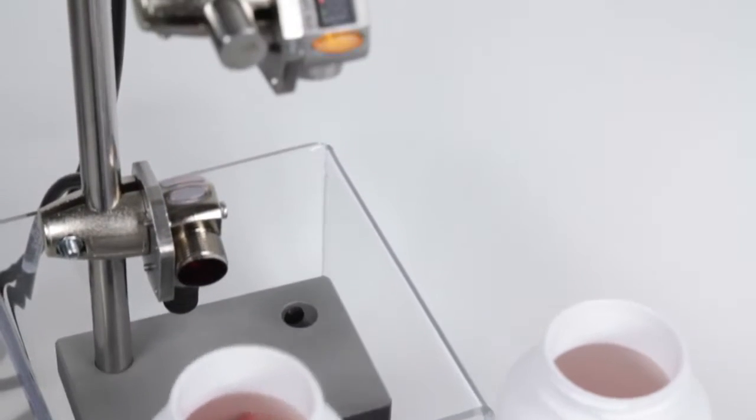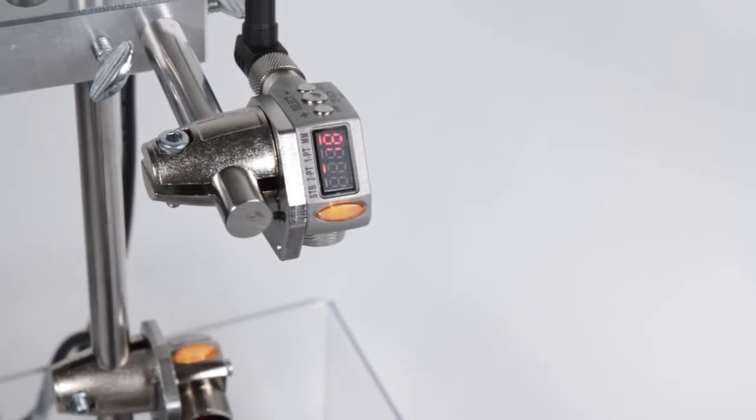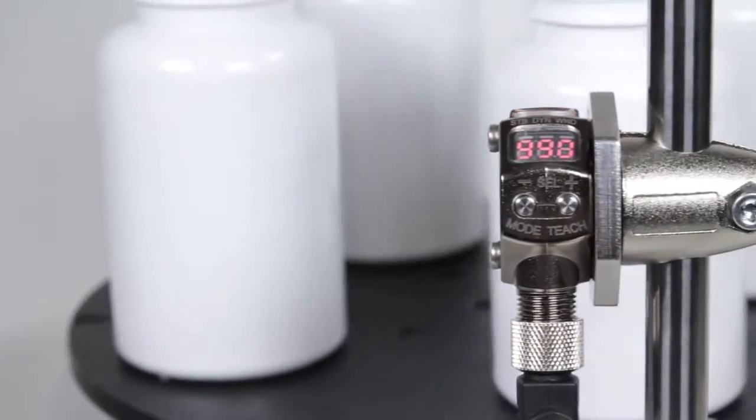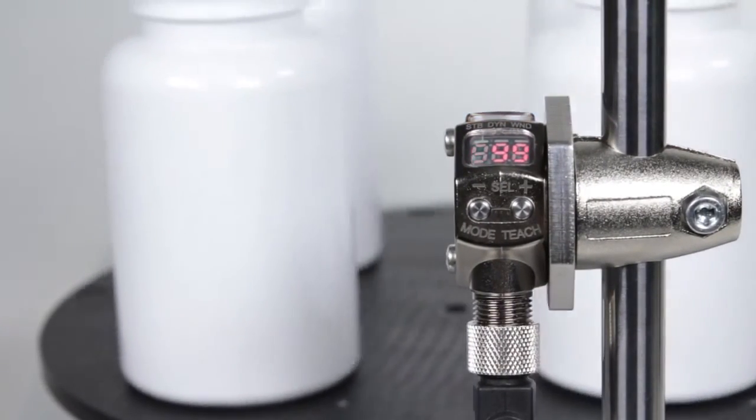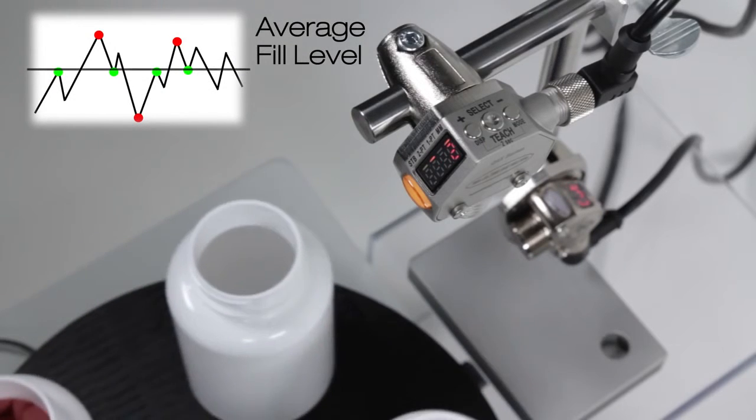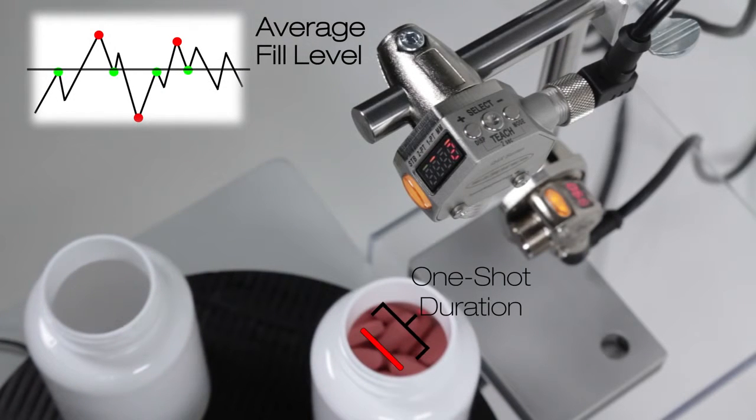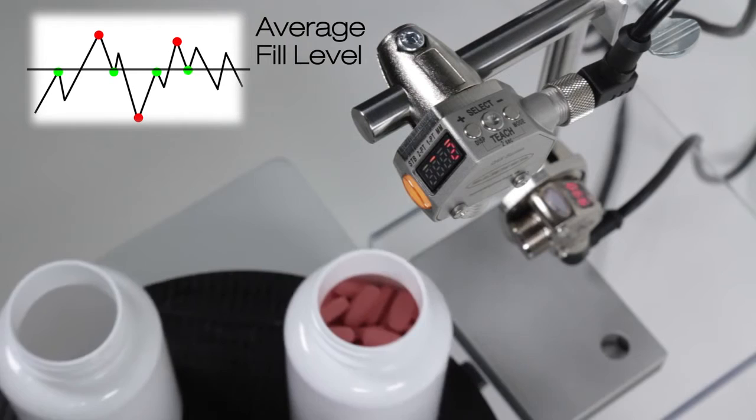The Q4X comes with advanced measurement modes, including a remote trigger input. In this case, a Q3X sensor is being used to send an extended one-shot discrete output to tell the Q4X when to measure and for how long. The Q4X will measure for a user-defined period of time and output a single analog output that reflects the average distance measured.